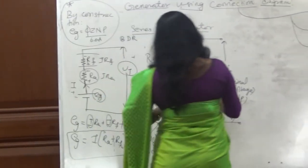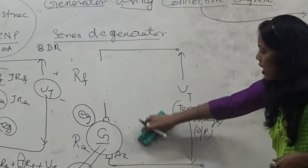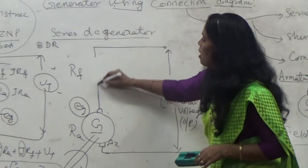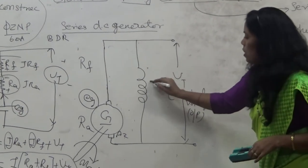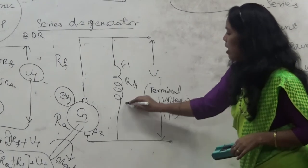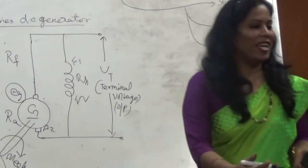The same thing, if you want to consider for the shunt winding, just remove the field winding and this field winding will be connected in parallel. This is the field winding, F1 and F2. Same process. Thank you.